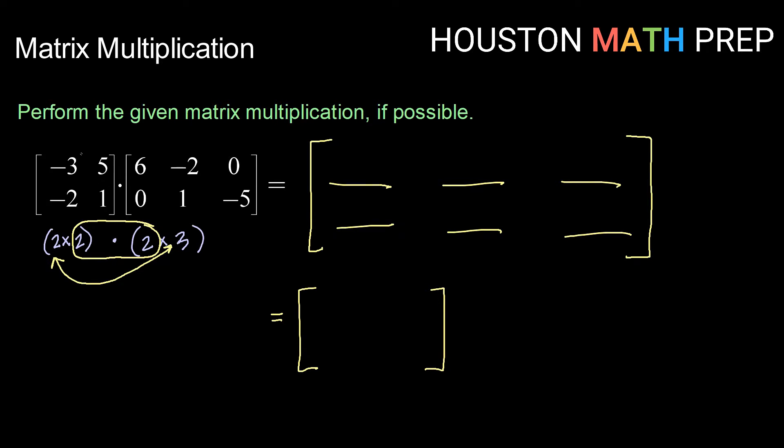Now when we perform matrix multiplication, we distribute the rows of the first matrix into the columns of the second matrix. So for our entry in row 1, column 1, we're going to distribute the first row of the matrix on the left into the first column of the matrix on the right. So here we'll have -3 times 6 plus 5 times 0, or -18 plus 0. So I can write that result, -18, down here in my answer matrix at row 1, column 1.